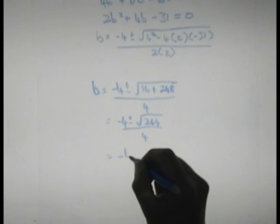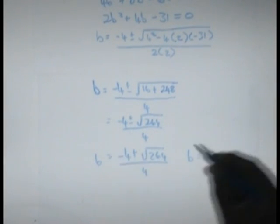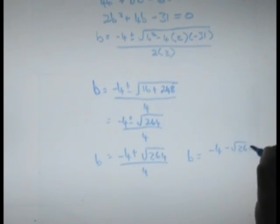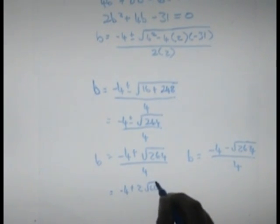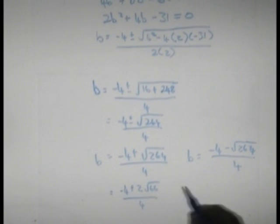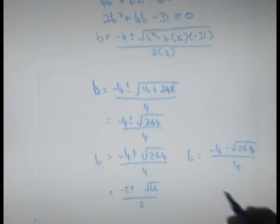That means my two coordinates of b can either be minus 4 plus root of 264 over 4 or b is equal to minus 4 minus root 264 over 4. Now 264 unfortunately isn't a perfect square. 4 does multiply into 264 and it goes in 66 times. So we can turn this into minus 4 plus 2 root 66 over 4. So it's negative 2 plus root 66 over 2 or b is equal to negative 2 minus root 66 over 2.